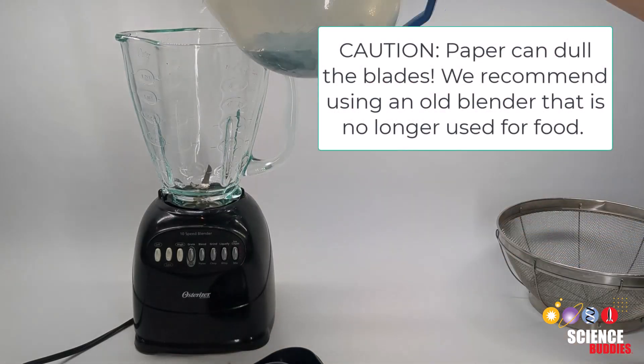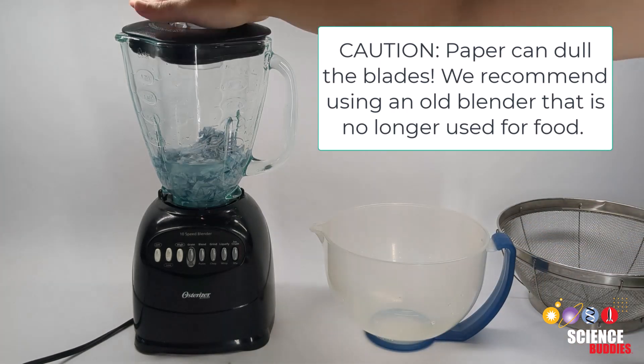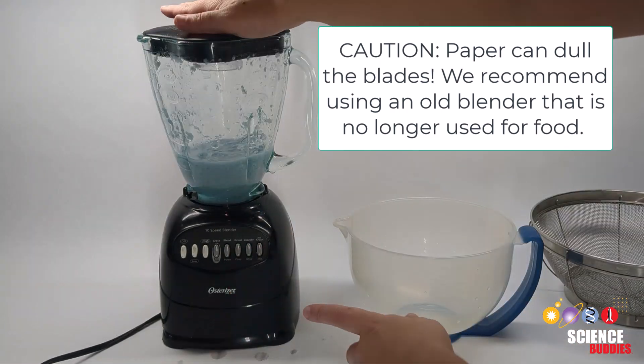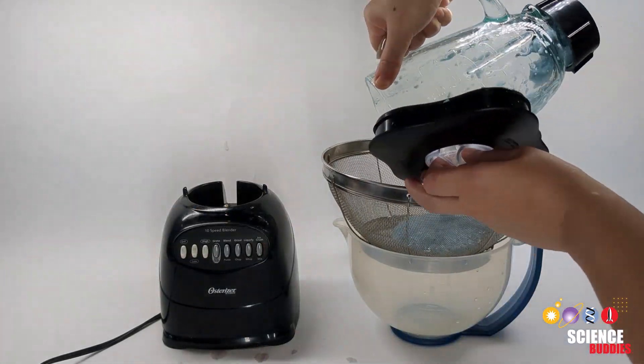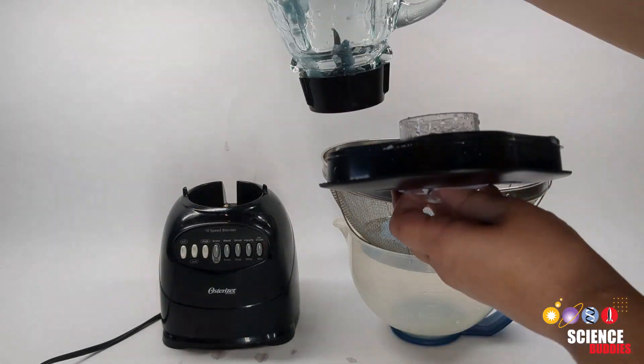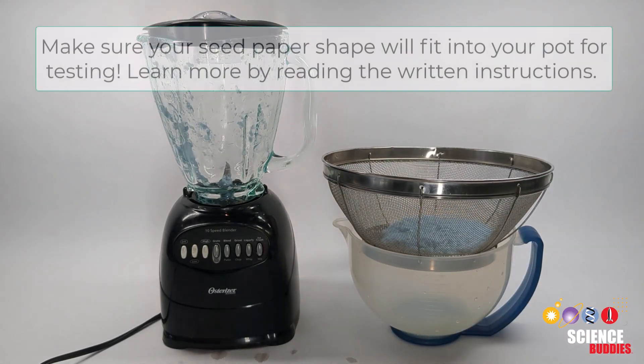Transfer all of the paper and water to a blender. Blend the paper until it becomes a thin pulp. After the paper has become a pulp, transfer the contents to a strainer over a bowl. Let the pulp drain off any excess liquid.